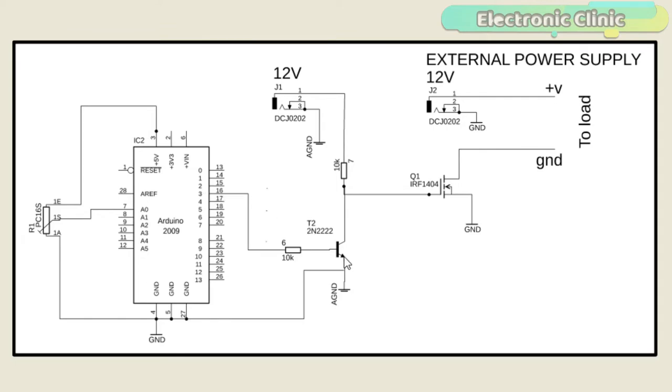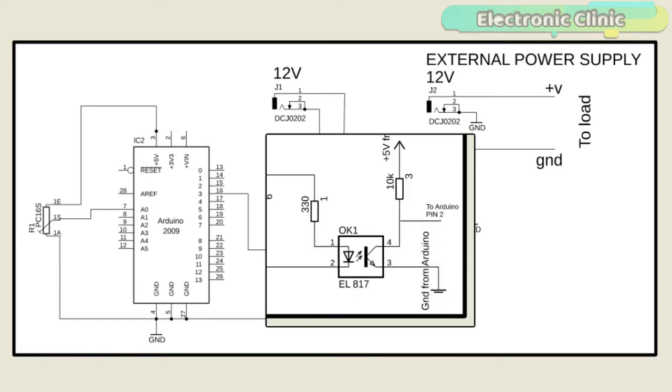The emitter of the 2N22222 NPN transistor is connected with the ground, while the collector is connected with the 12V power supply through a 10K resistor. Instead of using 2N22222, you can also use an optocoupler like EL817. If you want to learn how to use an optocoupler, then you can watch my tutorial on zero-crossing detector. I will provide a link in the description.